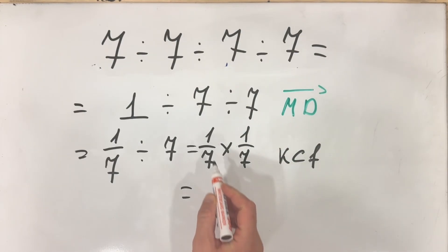And what we get? We get 1 over 7 multiplied by 1 over 7 is 1 over 49.